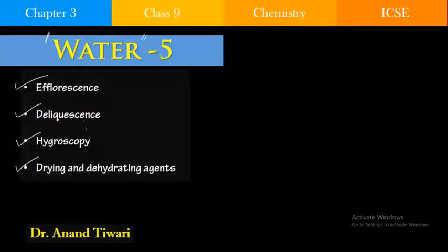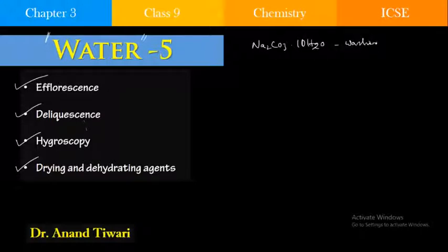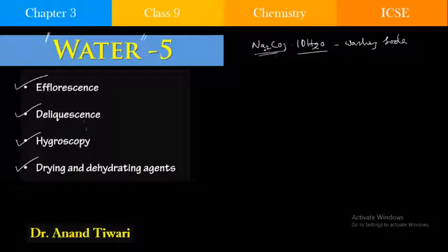From the previous video, you remember that some crystals have a water of crystallization. For example, washing soda crystals are sodium carbonate·10H2O. This 10H2O is the water of crystallization, and when we heat it, it loses this water of crystallization and becomes anhydrous sodium carbonate. Now we will be discussing about the properties of efflorescence, deliquescence, and hygroscopy — how are they different?